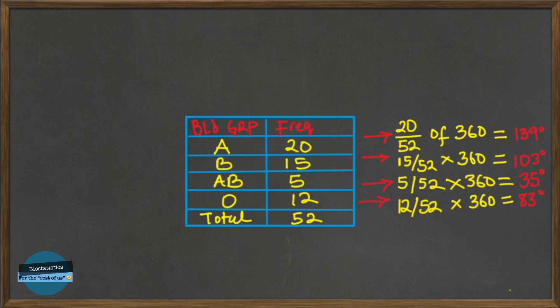So we now have all the corresponding degrees for each of the categories. So in order to do a quick check, all degrees should add up to 360 degrees.